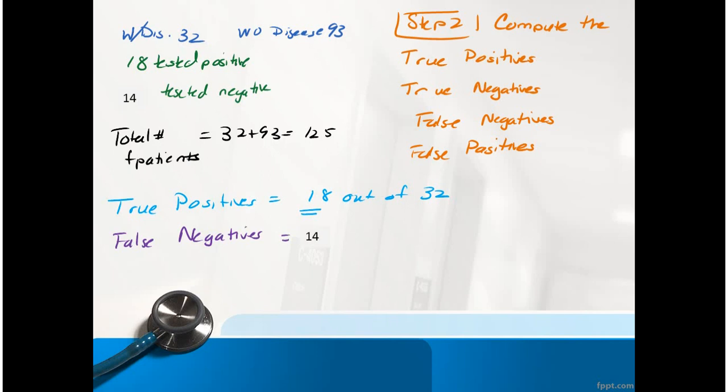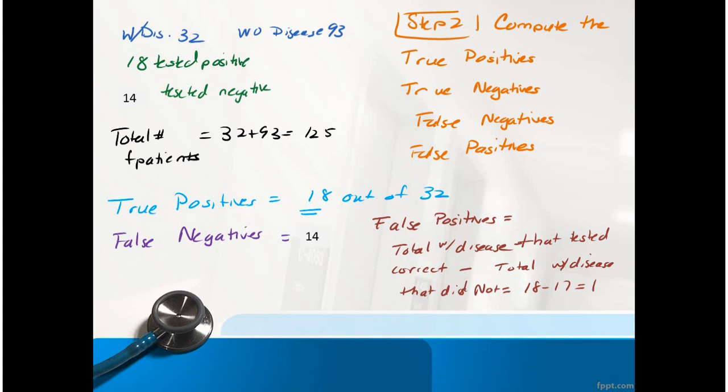The false negatives - I falsely said they did not have the disease. There are 14 people that actually did have the disease that I falsely told them you don't have the disease. Those are called false negatives. False positives are people who didn't have the disease that we said did have the disease. And true negatives were the total that we correctly identified as not having the disease.